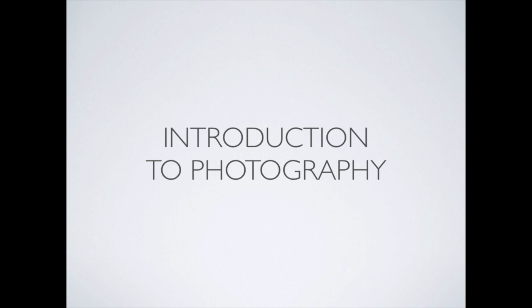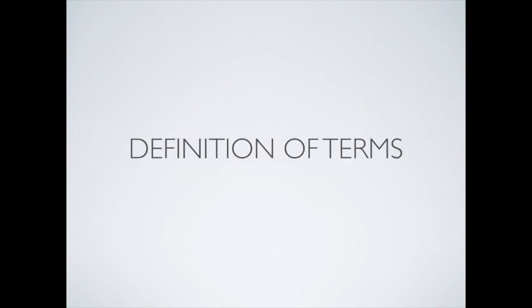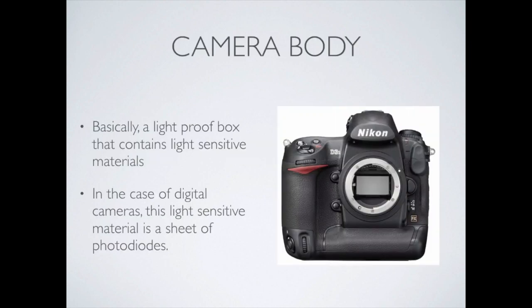We're going to talk about introduction to photography, and I'll start with a definition of terms so that we have some even playing field. A camera body is essentially a lightproof box — that's what it originally was. It was a box with a piece of sensitive material in it, i.e. film, and you would expose that film to light temporarily, and that would give you your picture.